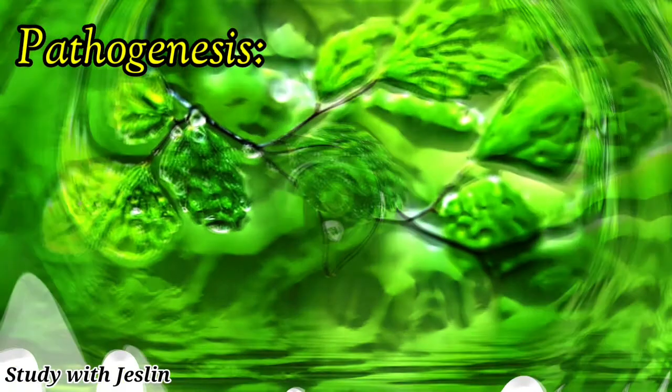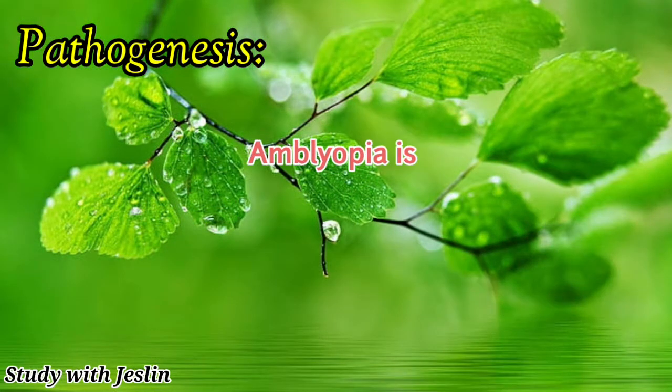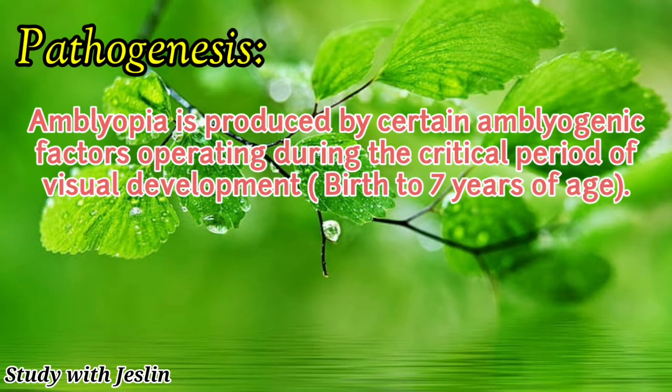Now the pathogenesis. Amblyopia is produced by certain amblygenic factors operating during the critical period of visual development, from birth to seven years of age. These are the chances that you will develop amblyopia during the critical time of visual development.